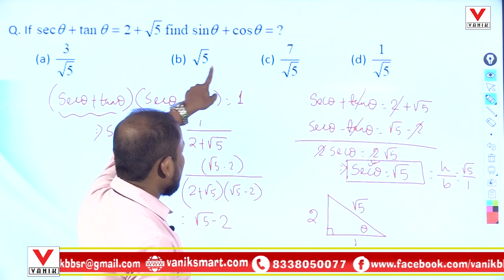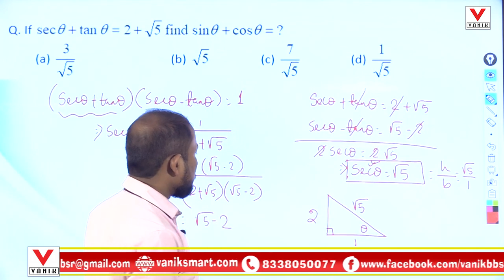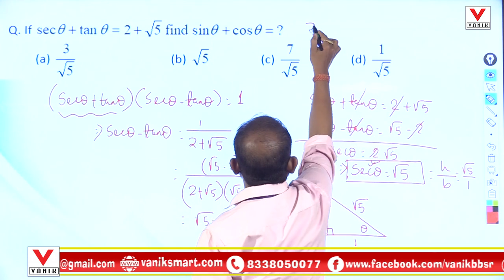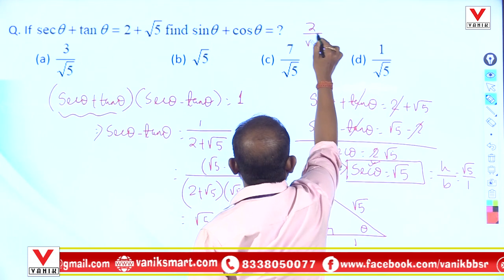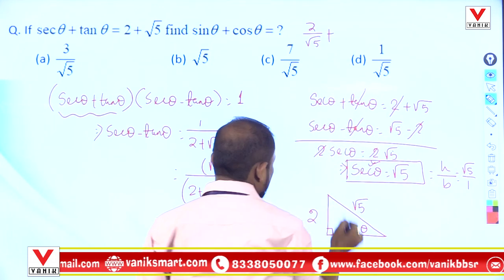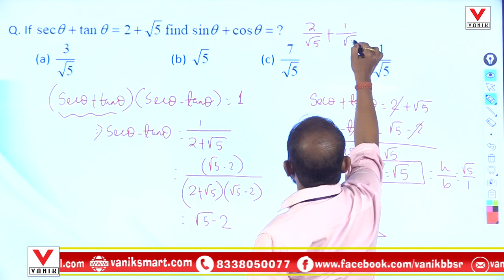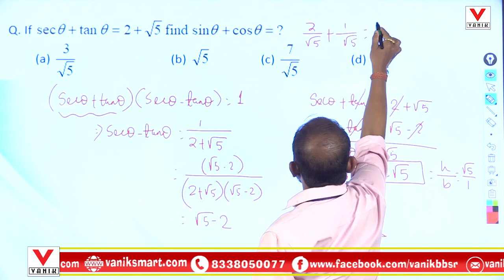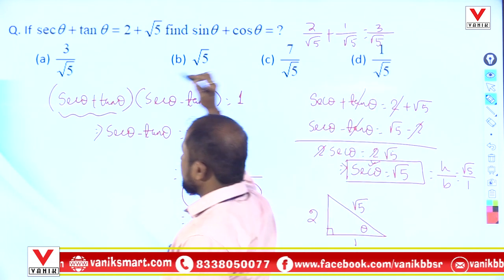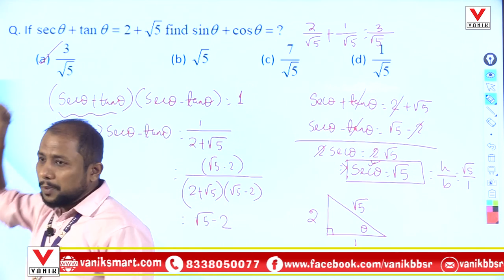The question asks for sin θ + cos θ. Sin θ = p/h = 2/√5 and cos θ = b/h = 1/√5. So sin θ + cos θ = 3/√5. That is your answer.